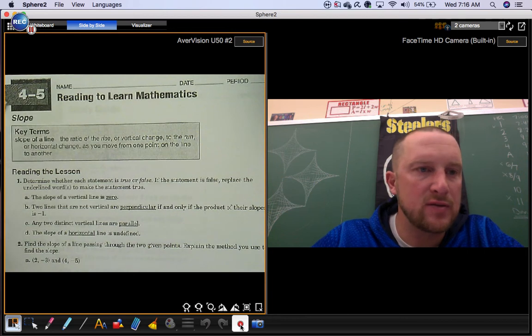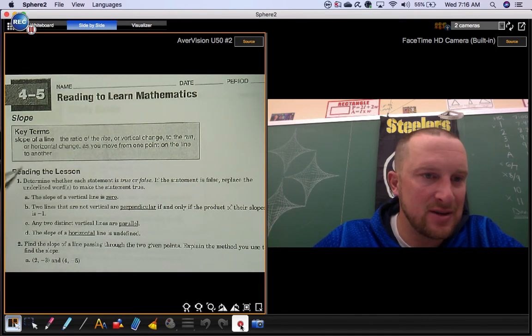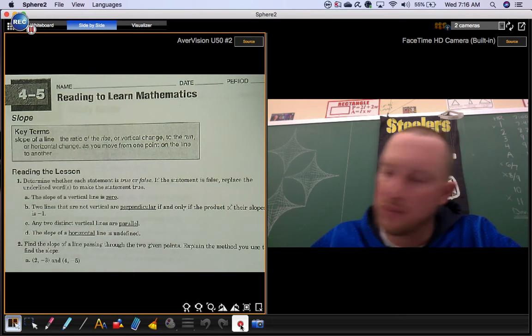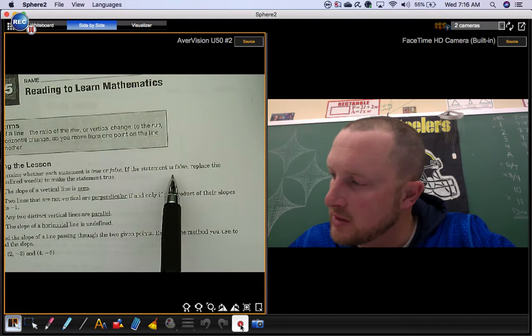Welcome to the Reading to Learn Math page for section 4.5 on slope. If you have forgotten, they tell you what the slope of a line is. Number one, reading the lesson: determine whether each statement is true or false. If the statement is false, replace the underlined word or words to make the statement true. The slope of a vertical line is zero.